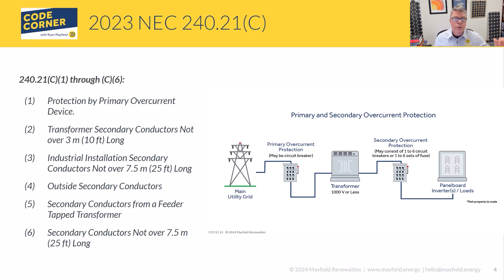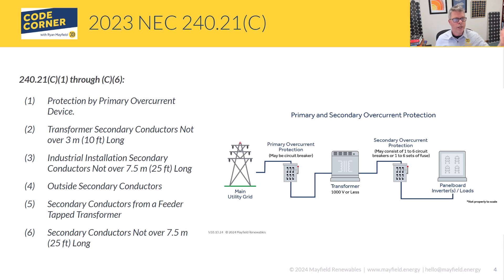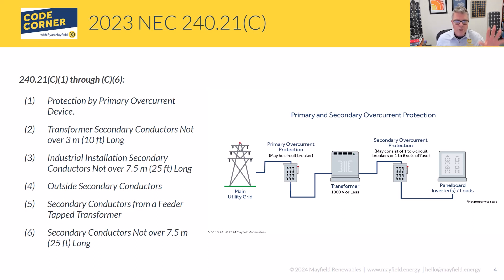240.21C1 through C6 gives six different scenarios with rules that apply differently. C1: protected by a primary overcurrent device — in PV systems this almost universally does not apply. C2: conductors not more than 3 meters or 10 feet long. C3: industrial installations. C4: outside conductors. C5: secondary conductors from a feeder, pointing back to 240.21B. C6: secondary conductors not over 25 feet or 7.5 meters. You'll need to go through each based on the length of your feeder conductors to understand which applies.